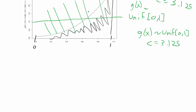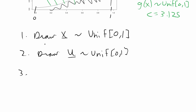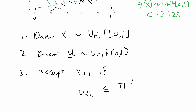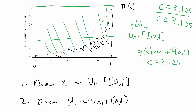Writing the algorithm out: draw random samples x from the proposal distribution Uniform(0,1); draw uniform random samples u from Uniform(0,1); accept x_i if u_i ≤ π(x_i) / (3.125 · g(x_i)), otherwise reject. The accepted x samples will be distributed according to the target distribution π(x). That's the algorithm for this example.